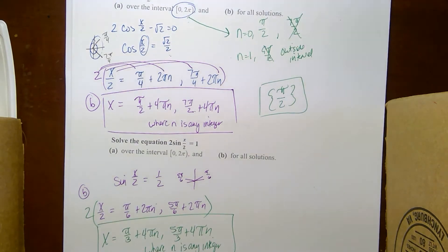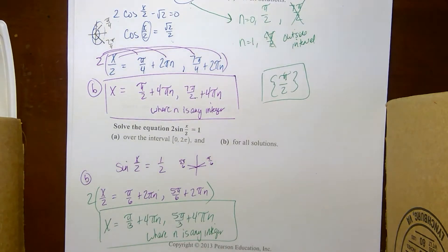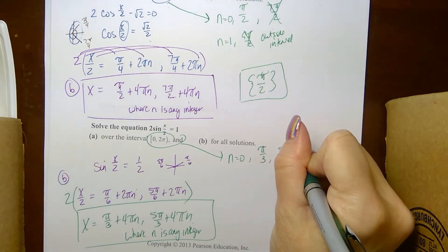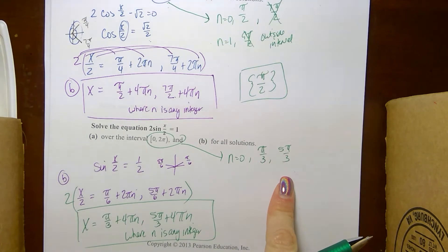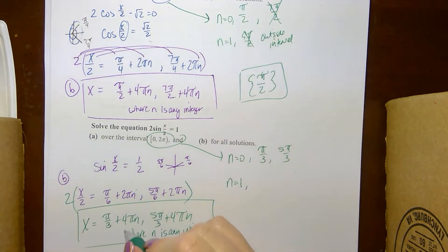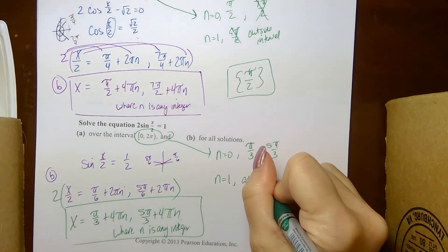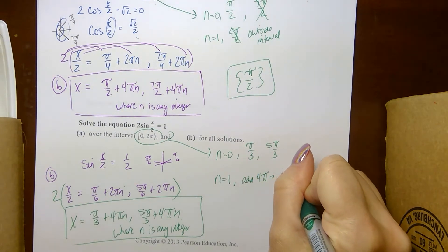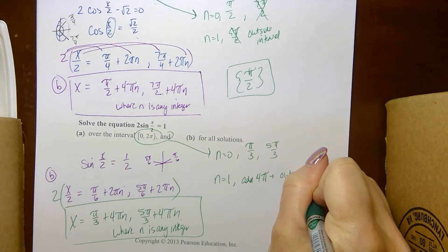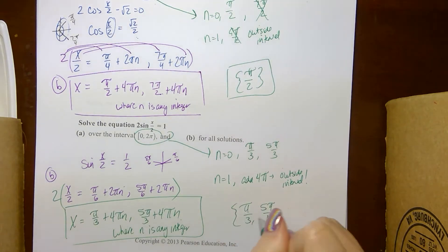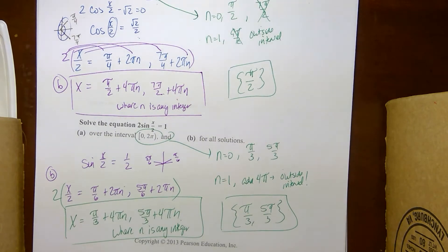What solutions exist within the interval? If n = 0, that gives π/3 and 5π/3 — both inside the interval. If n = 1, we'd add 4π to both, which is necessarily outside 0 to 2π. So the only solutions are π/3 and 5π/3.